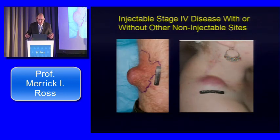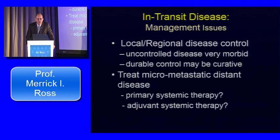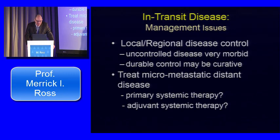When we focus on treating these patients, there are two issues to address. There are also patients with soft tissue stage 4 metastases, with or without non-injectable sites, where lesions are clearly easily injectable. This brings up the issue of management: there's the issue of local regional disease control, because uncontrolled disease is very morbid while durable control could be curative in some patients. Most probably have micrometastatic disease at presentation, so there must be discussion about whether to use primary or adjuvant systemic therapy after controlling the local disease.